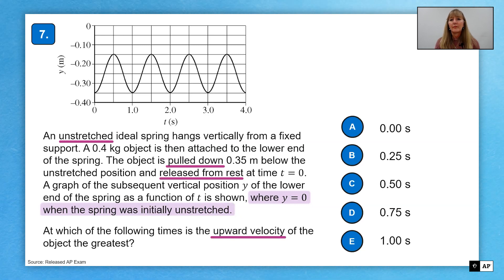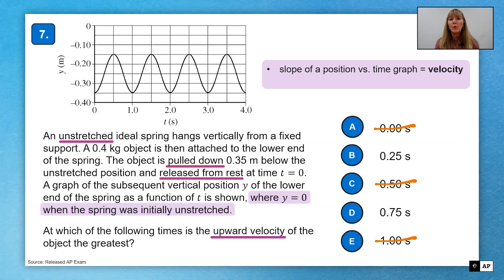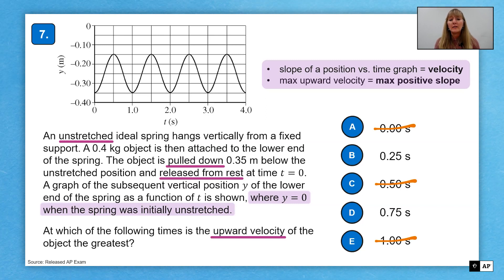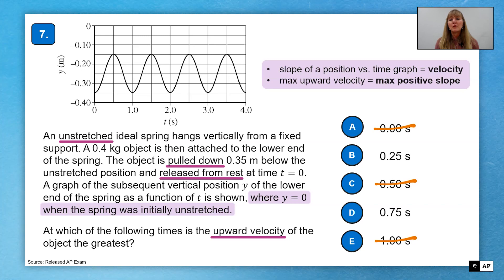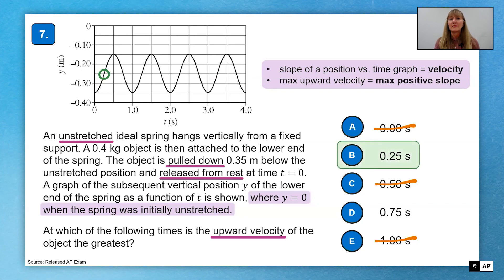The first question at which of the following times is the upward velocity of the object the greatest. I know that the slope of a position time graph is equal to the velocity of the object. So at times 0.5 and one second, I am either at a maximum or a minimum value. Therefore, my velocity is zero and can't be the choice. So just knowing that piece of information gets me down to choices B and D. At least you get a 50% chance of guessing if you're not sure what to do next. Here, though, I know that I want upward velocity. That means I need a positive slope. In between 0.25 and 0.75, the only one that shows a positive slope is 0.25 seconds, choice B.